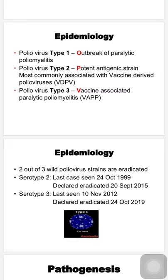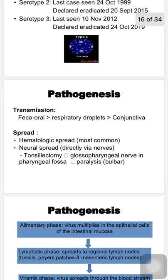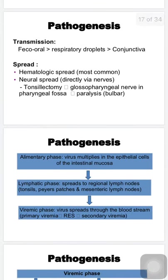By now, two out of three poliovirus strains have been eradicated. Serotype 2 was the first eradicated — the last case was seen in 1999 and it was declared eradicated in 2015. Serotype 3's last case was seen in 2012 and was declared eradicated in 2019. Serotype 1 is still remaining, with cases still recorded in Afghanistan and Pakistan.